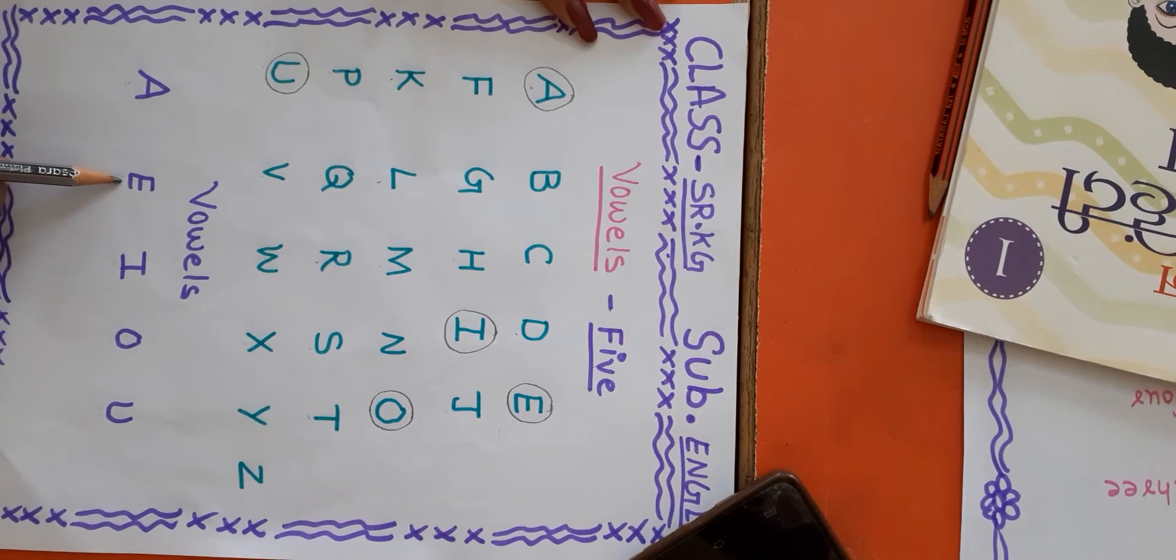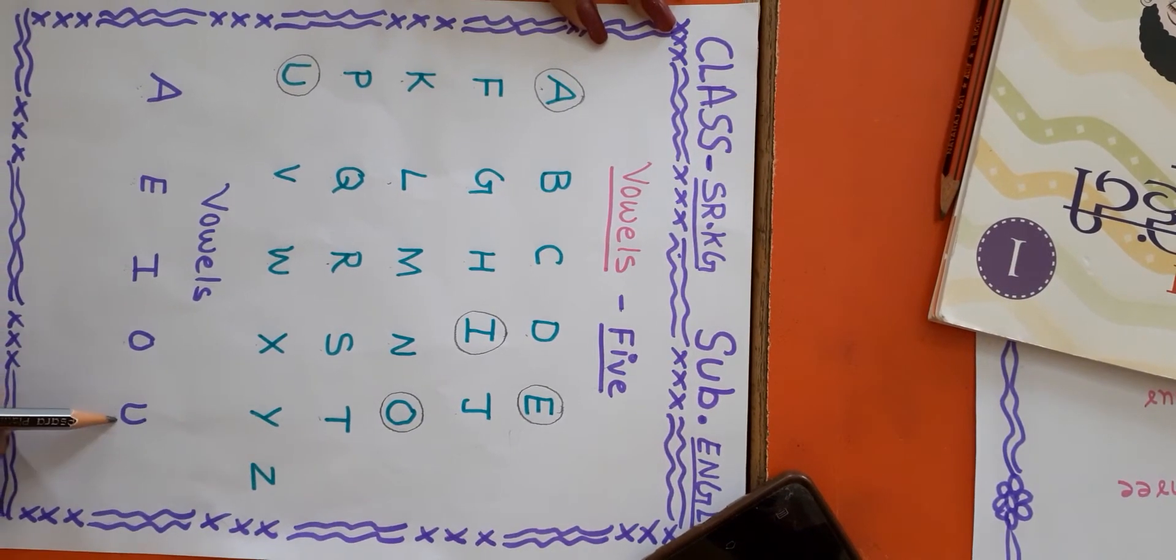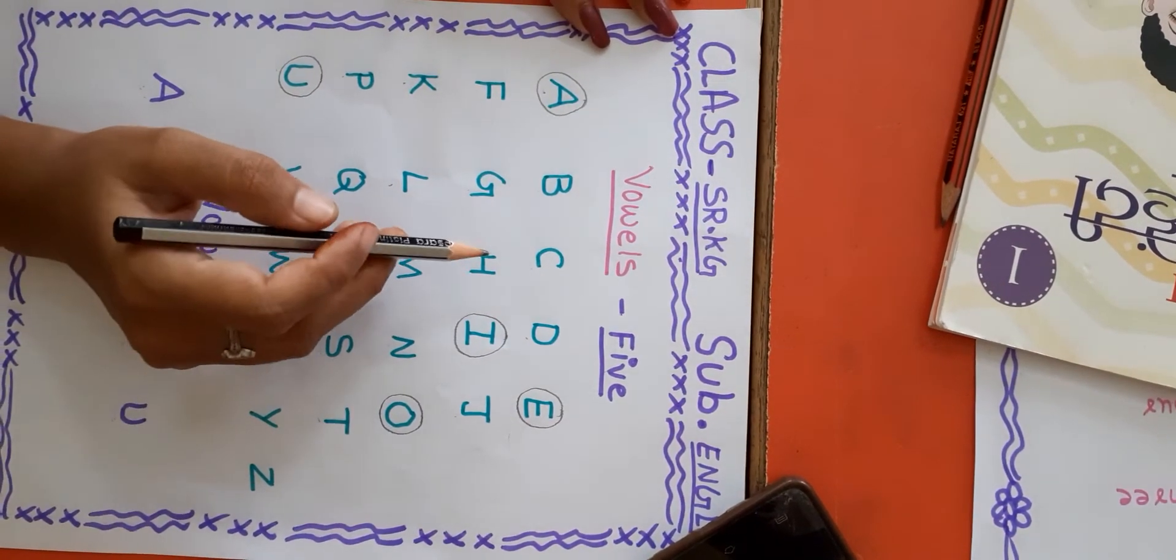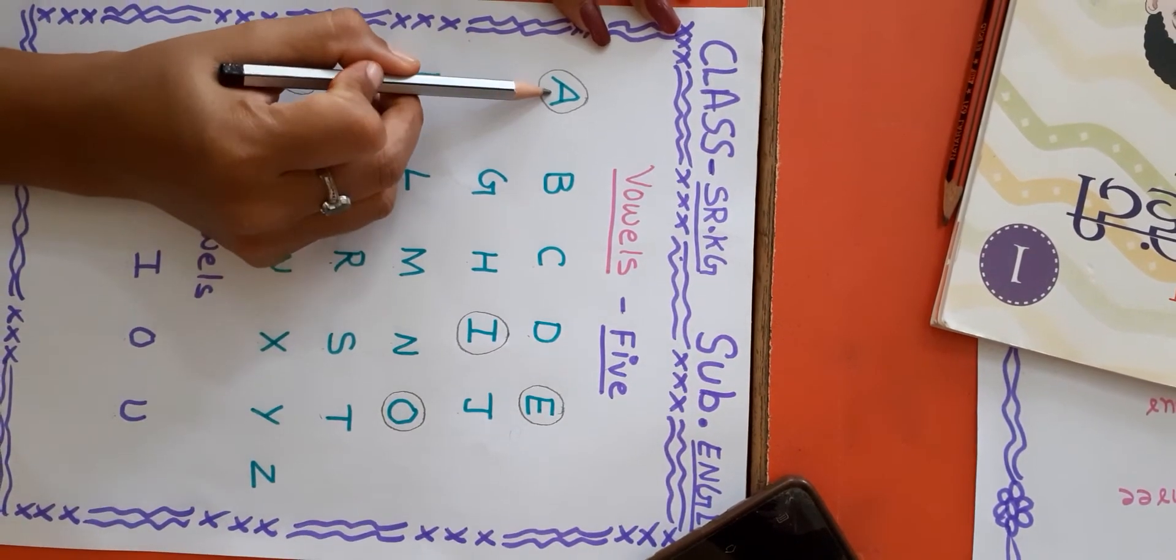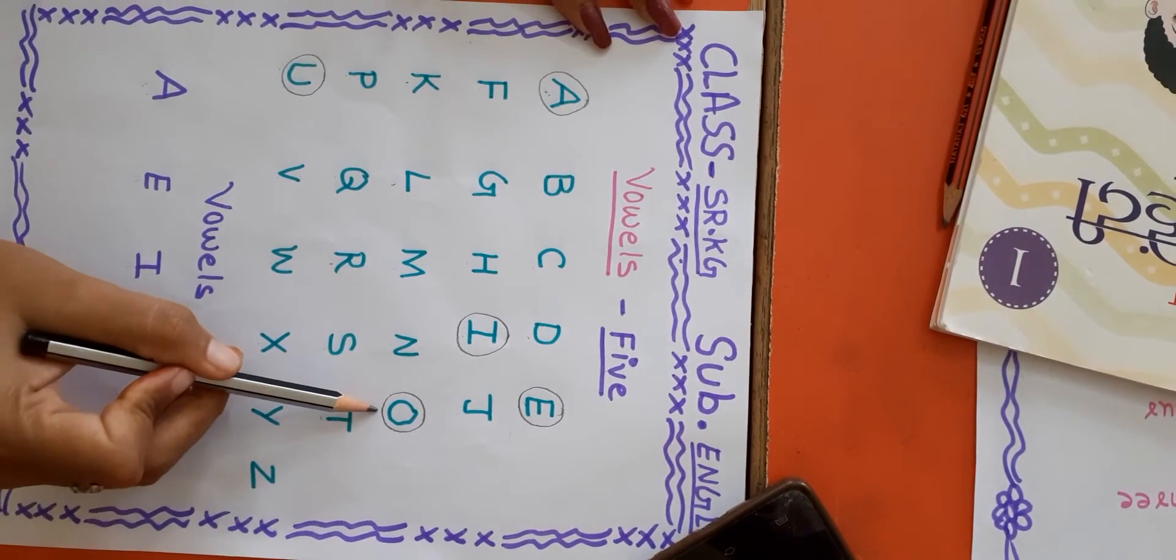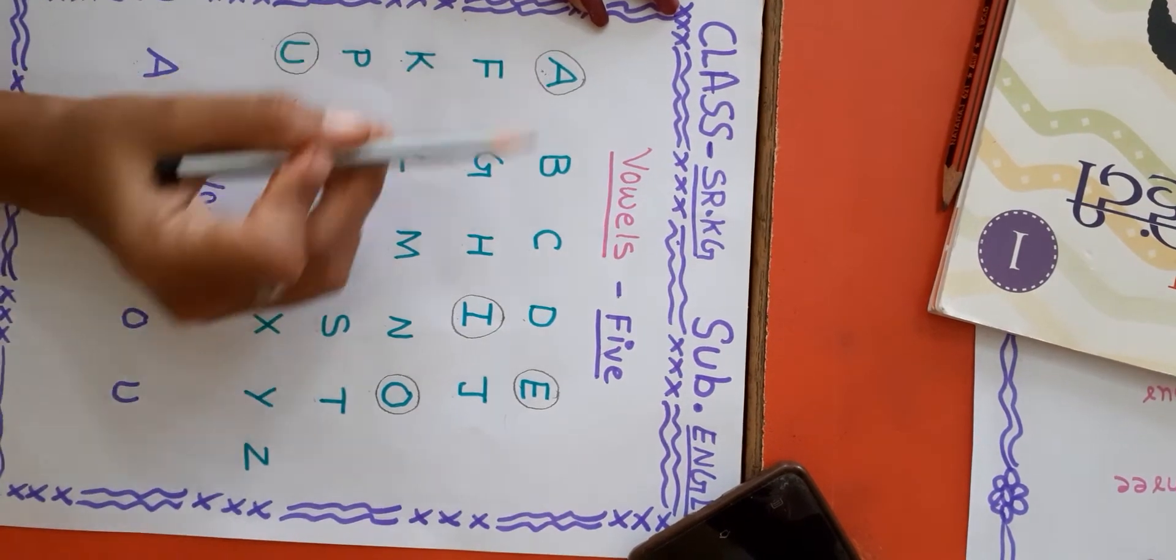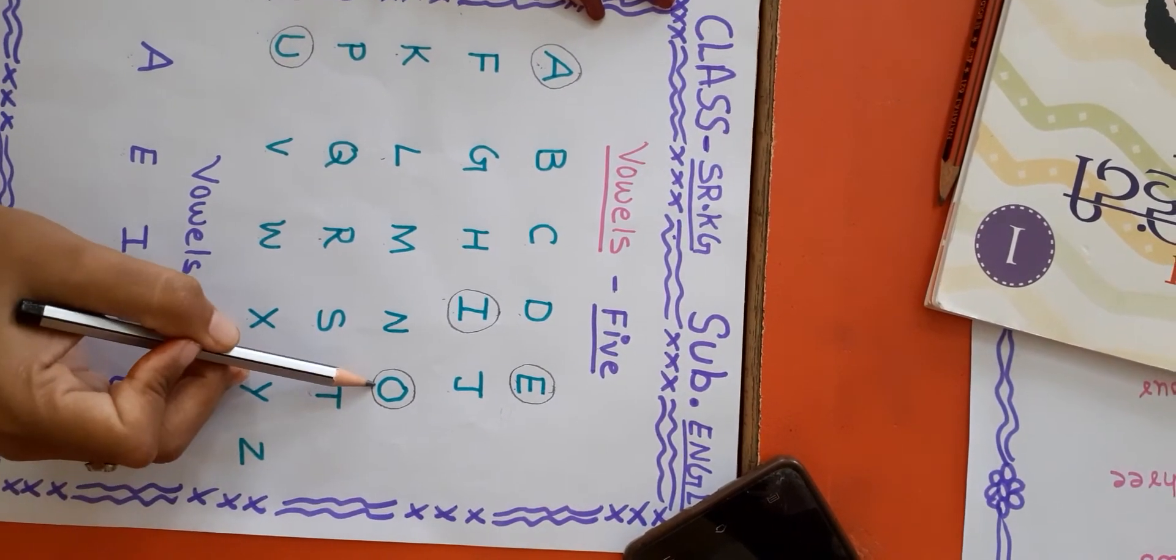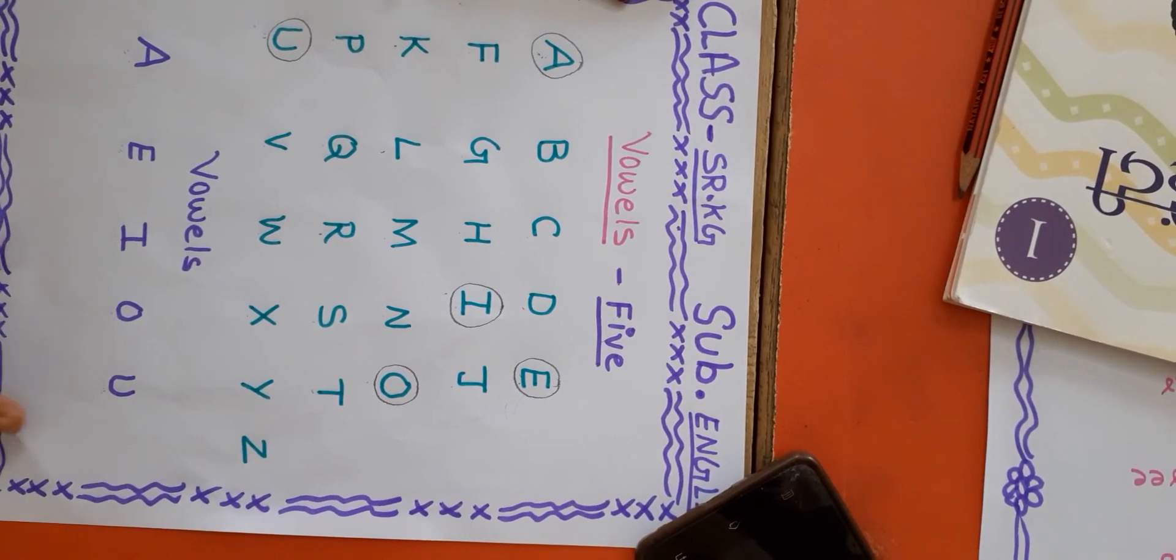A E I O U. Find the vowels in this letter. A E I O U. Now again repeat: A E I O U. Okay? Thank you.